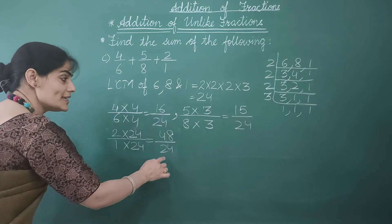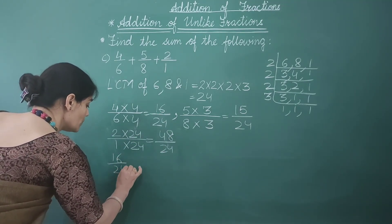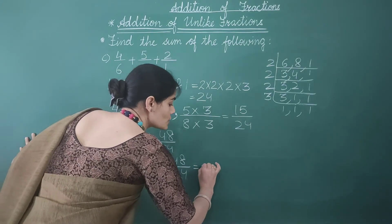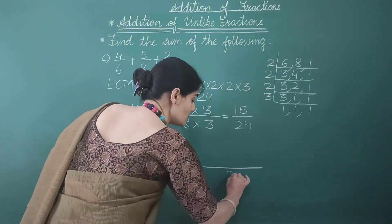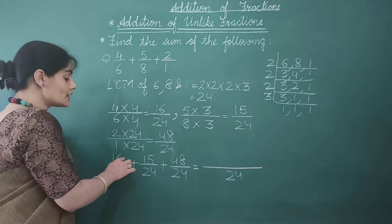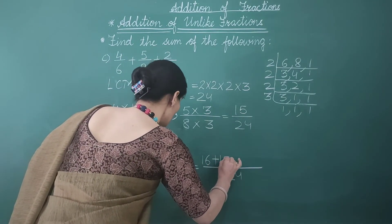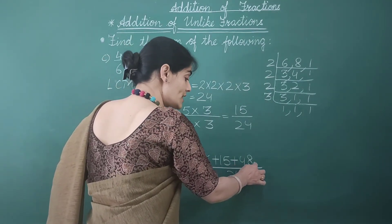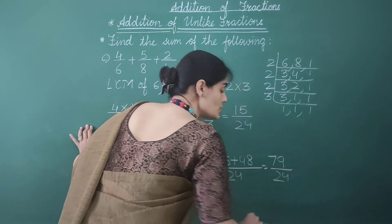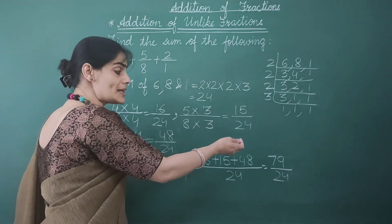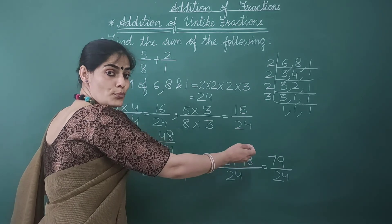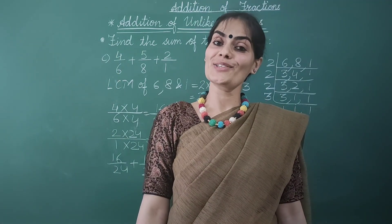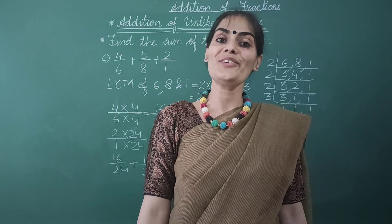So the sum is 16 by 24 plus 15 by 24 plus 48 by 24. We write the common denominator 24, then find the sum of the numerators: 16 plus 15 plus 48. 16 plus 15 is 31, and 31 plus 48 gives us 79 by 24. In all three parts, we got improper fractions as the sum. If you want, you can convert them to mixed fractions also. I hope you all understood how to find the sum of unlike fractions. Bye-bye.